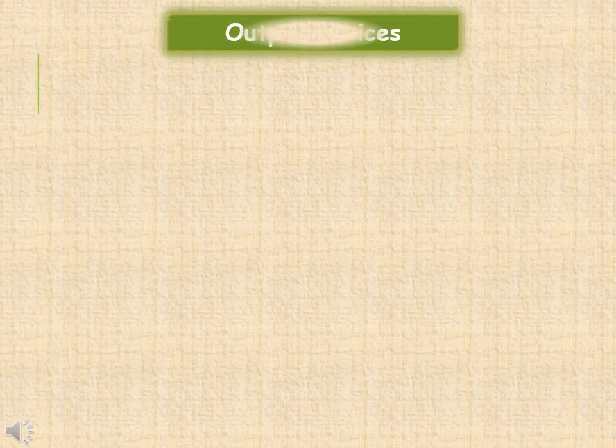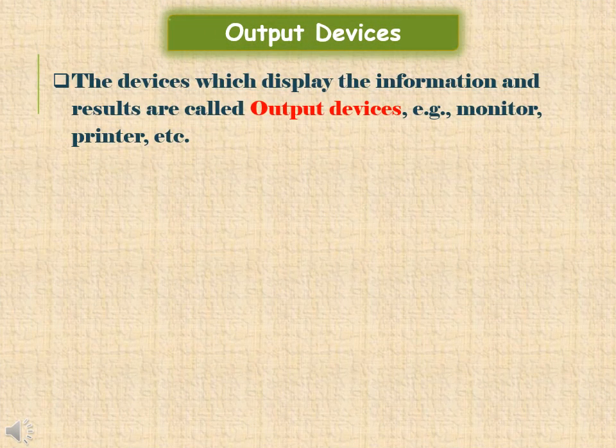What are output devices? The devices which display the information and results are called output devices. Examples include monitor, printer, speaker, etc.